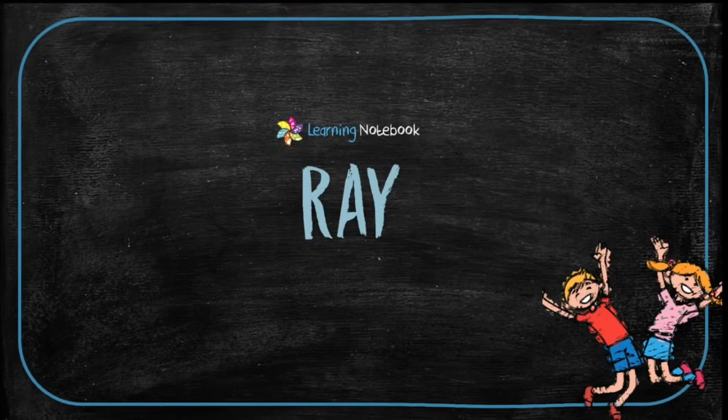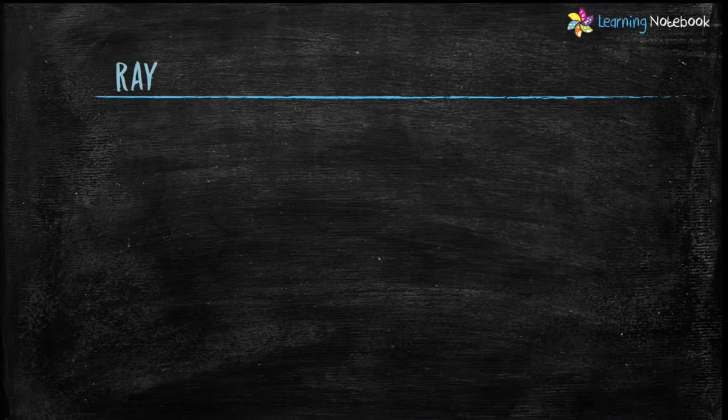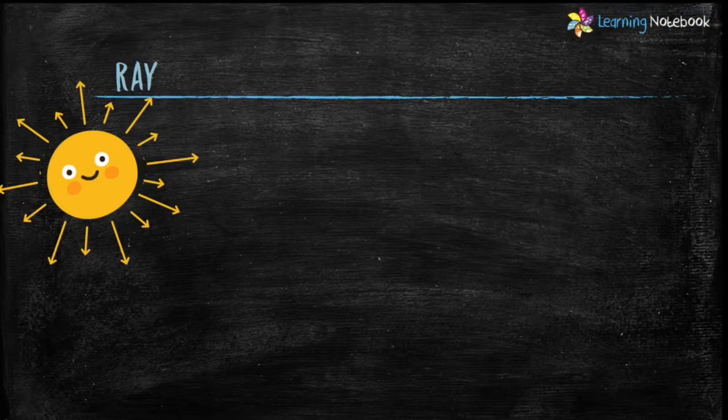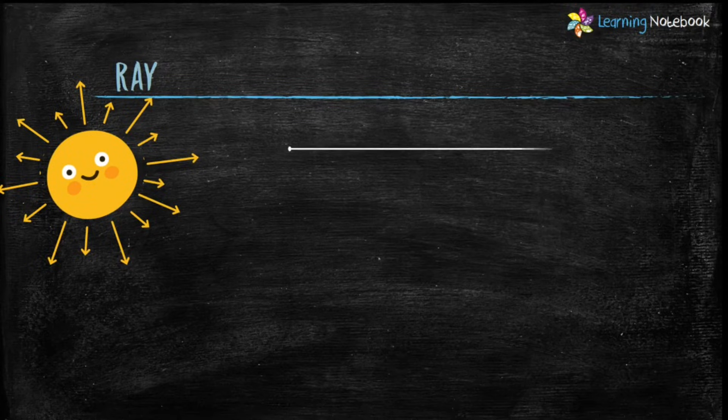Next is ray. Students, what do you recall when I say ray? Yes, it is sun rays which is an example of ray. Let's draw a ray and denote it with E and F.